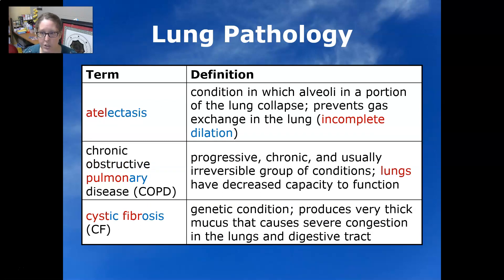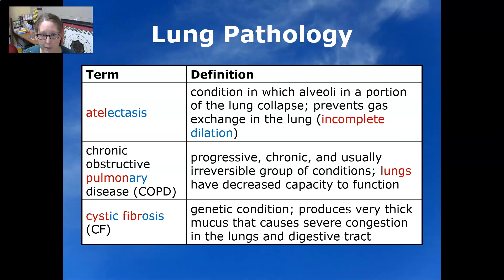Atelectasis is a condition in which the alveoli and a portion of the lungs collapse, preventing gas exchange in the lung and incomplete dilation. Once the alveoli are collapsed flat, they can't reinflate back — that's the problem.